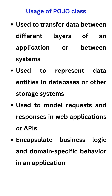POJO classes are mainly used to transfer data between different layers of an application or between systems, to represent data entities in databases or other storage systems, to model requests and responses in web applications or APIs, and to encapsulate business logic and domain-specific behavior in an application.